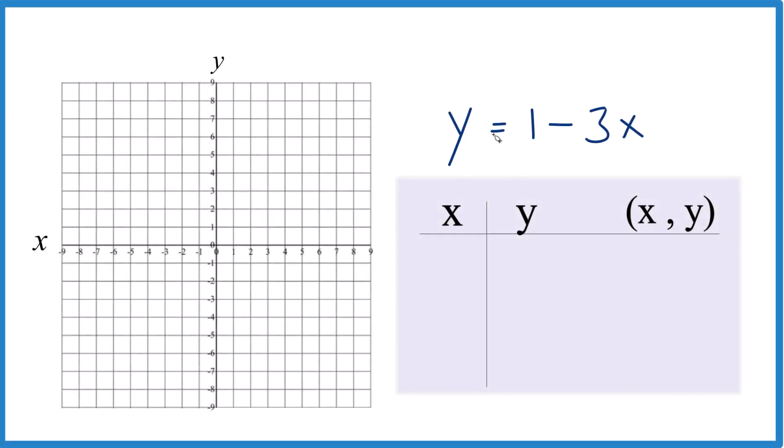Let's graph this equation y equals 1 minus 3x, and we're going to use a table of values to do this. You could use slope-intercept form. In this case, it's probably easier just to put some values in for x, find y, and then graph those points. That'll give us an equation for y equals 1 minus 3x.